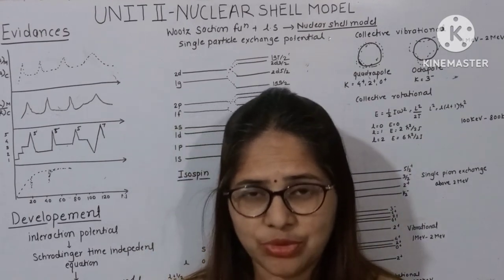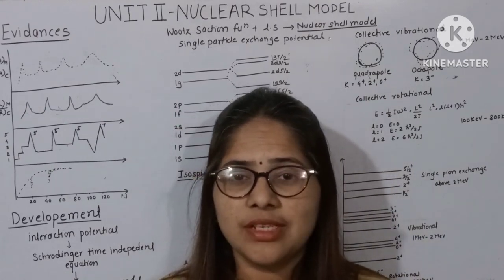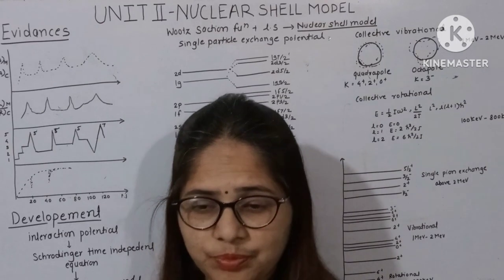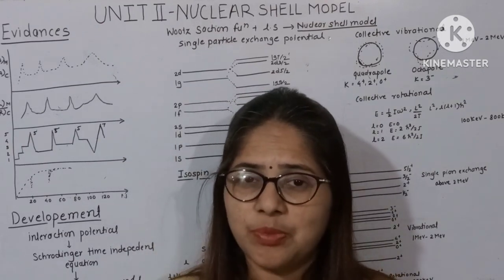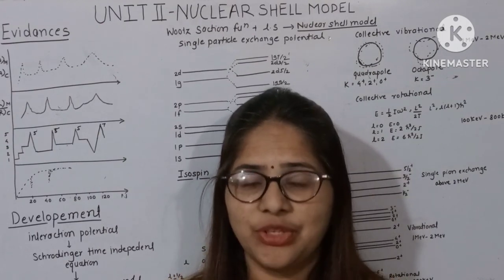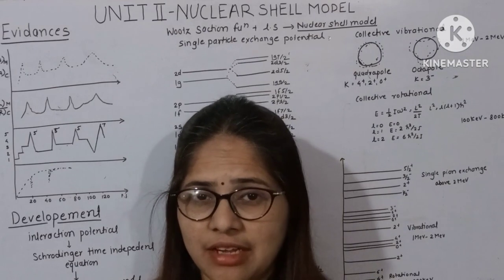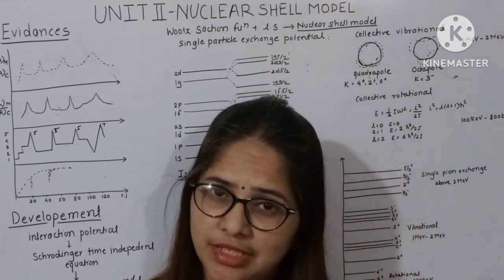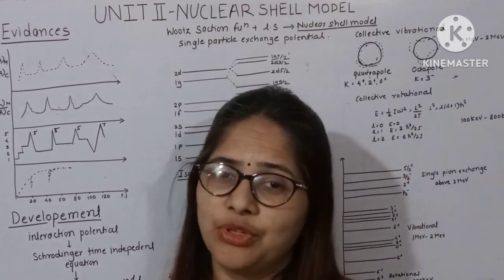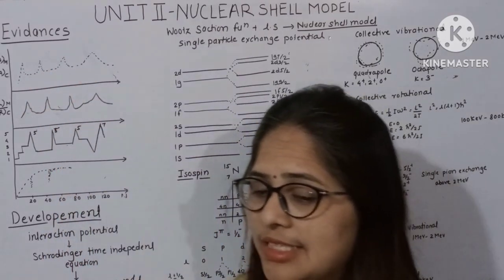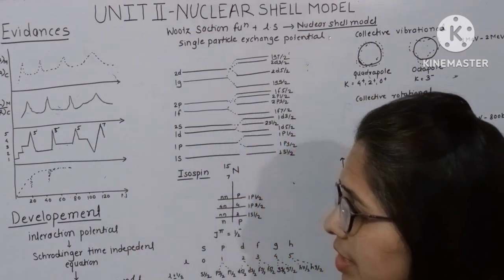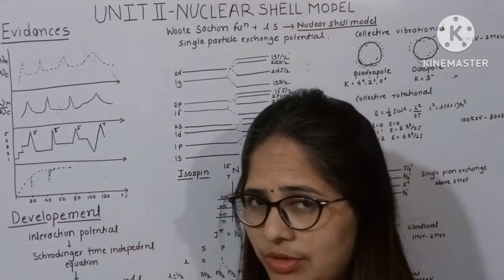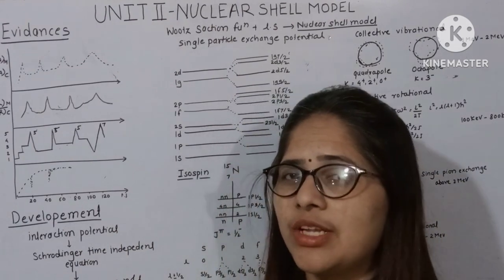Before coming to nuclear particle physics, we only knew that the nucleus consists of neutrons and protons — protons are positively charged and neutrons are neutral. Now we are going to see how protons and neutrons are filled inside the nucleus. These experimental results are called evidences for the nuclear shell model. The graph has been drawn against the number of nucleons — protons and neutrons collectively called nucleons.